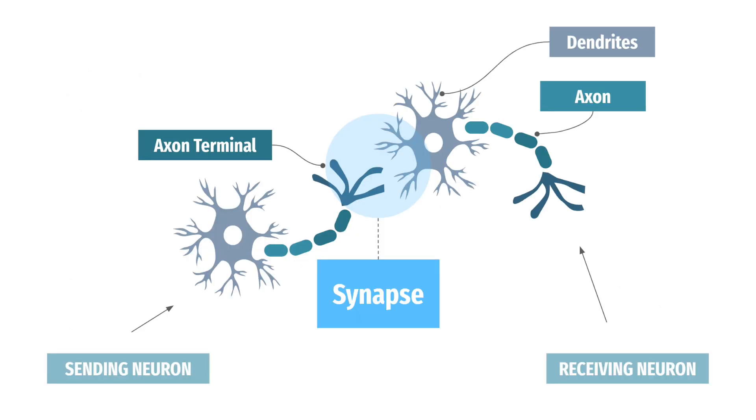After the neurotransmitters have been released, they are either taken back up by the sending neuron through a process called reuptake, or broken down by enzymes. This allows the synapse to reset and be ready for future signaling.